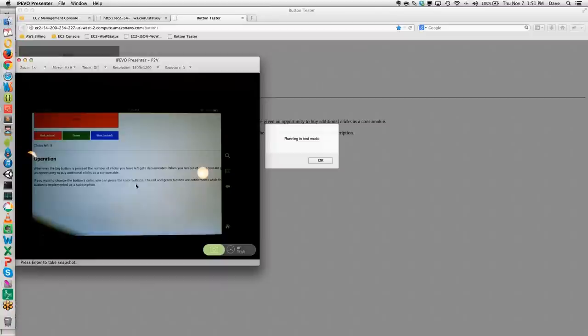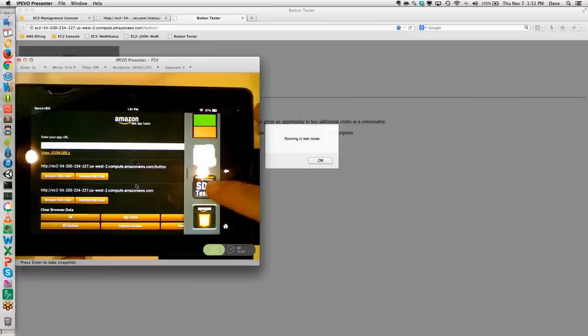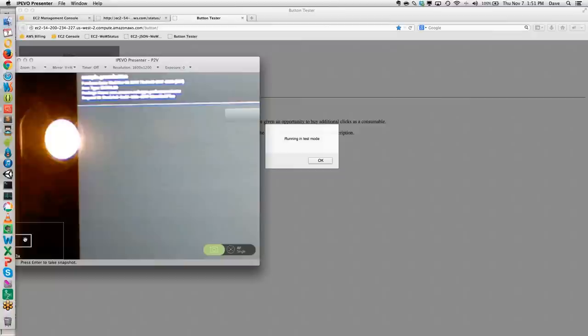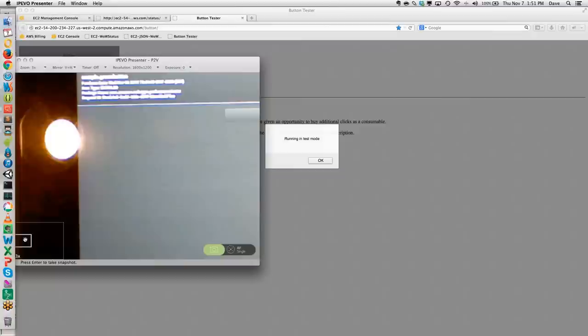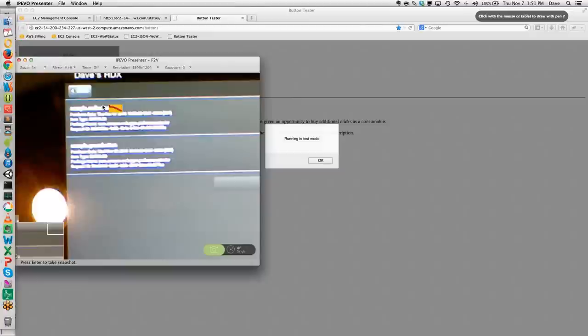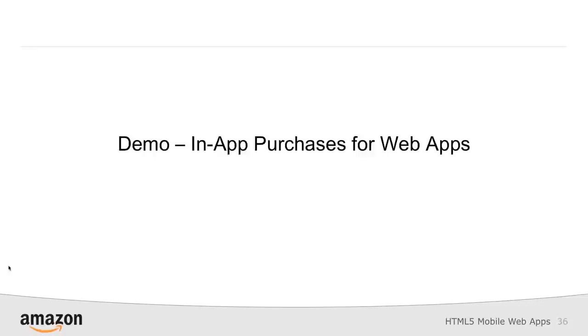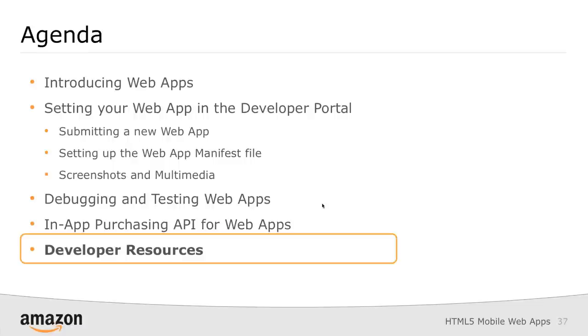We've seen how we can take our existing mobile web app, go into the developer portal at no cost, and set up that web app to run as an app within the Amazon App Store. We saw how easy it was to debug and test our apps on a physical device, and we saw how we can monetize our apps using the in-app purchasing API for JavaScript.